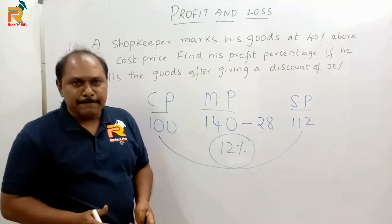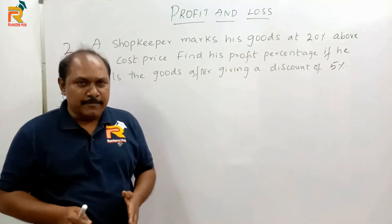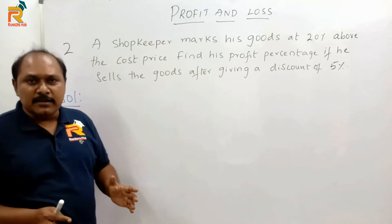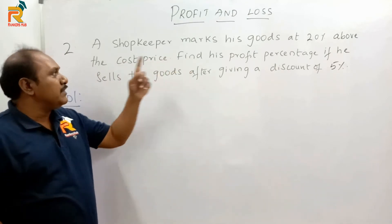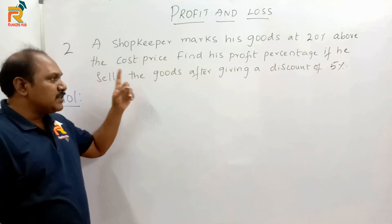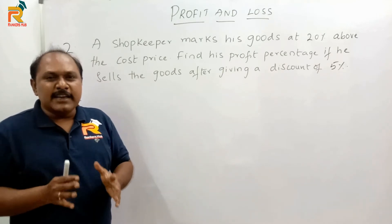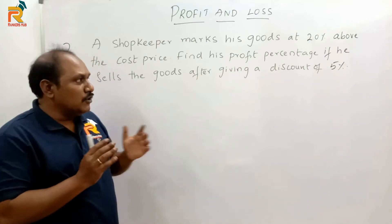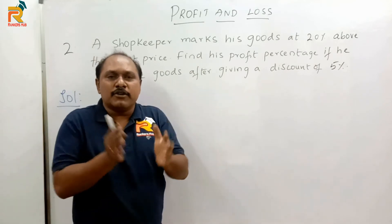So the profit earned by the shopkeeper is 12%. This is how we can answer this particular question in a very simple way. For more videos on aptitude, please subscribe to our channel Rankers Hub. Now all of you please take a challenge and try to answer this question in 10 seconds: A shopkeeper marks his goods at 20% above the cost price — take 10 seconds and try to answer it.